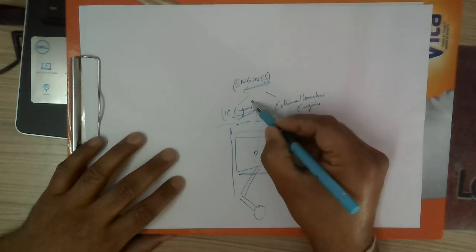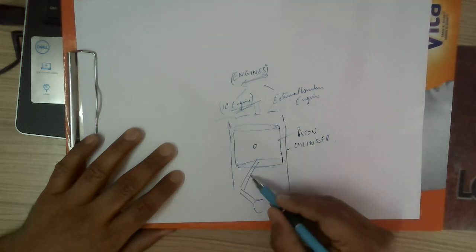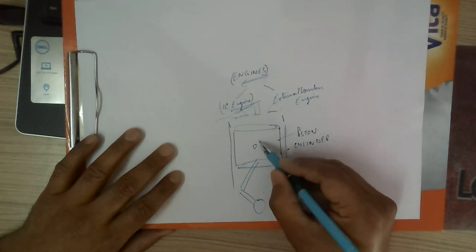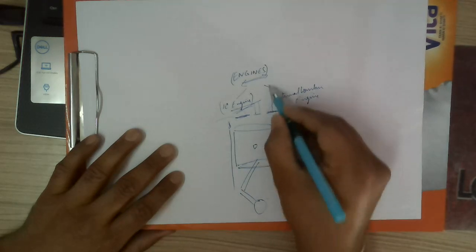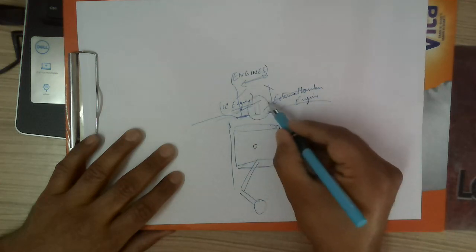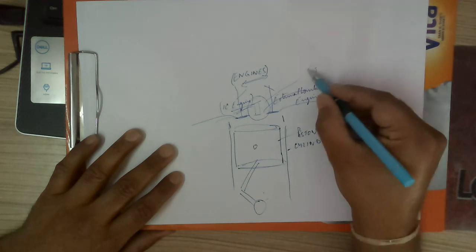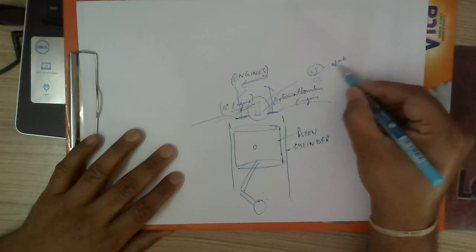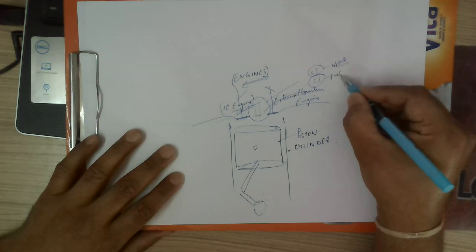In internal combustion engines, we have a piston and cylinder arrangement, a connecting rod connected to the crankshaft and crank, and a piston. The key components are your valves — the inlet valve and exhaust valve. The engine can work on SI engines, which require a spark plug to ignite the fuel, or on CI engines.